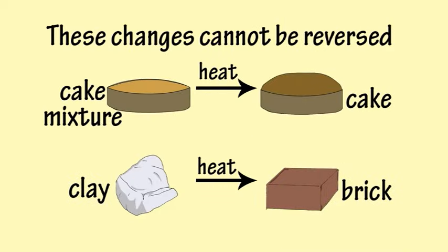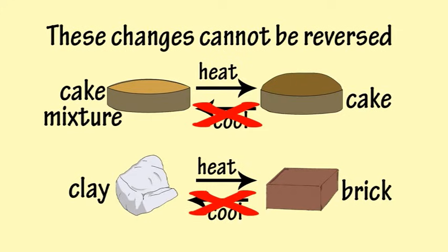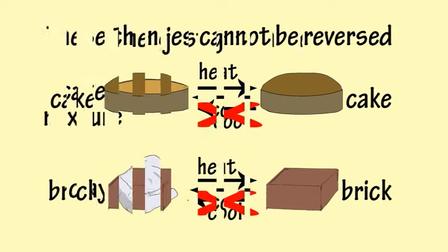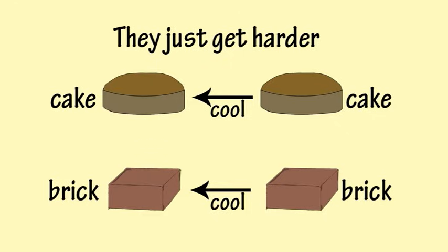These changes cannot be reversed. Cake doesn't change back into cake mixture and bricks don't change back into clay when they are cooled down. They just get harder.